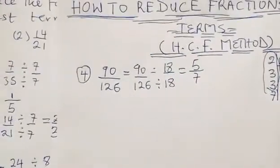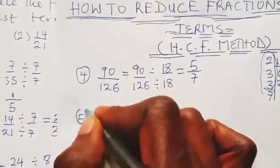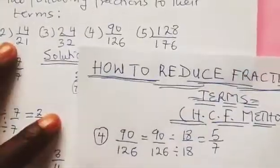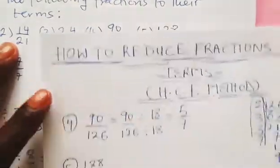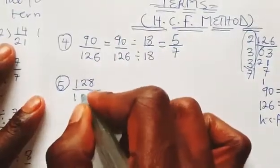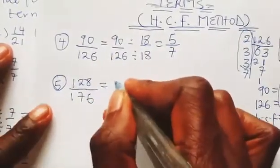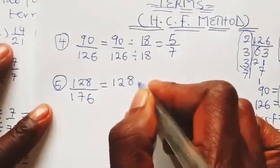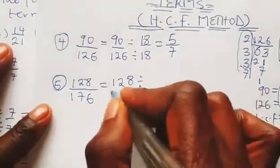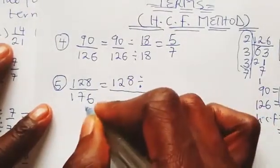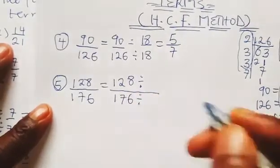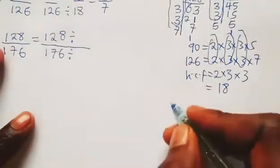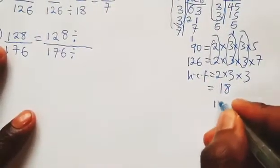Now let us take the 5th example. We have 128 divided by 176. All we have to do is write our 128 over 176 with our division sign, and find the HCF between 128 and 176. We begin by writing out 128 and dividing by 2.